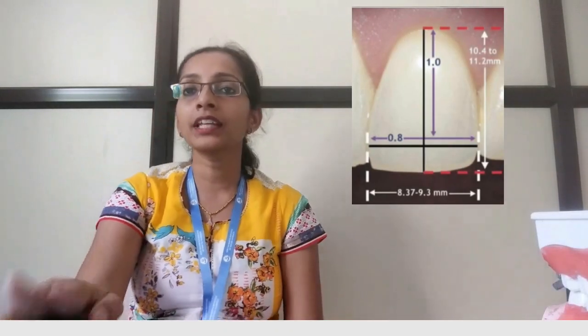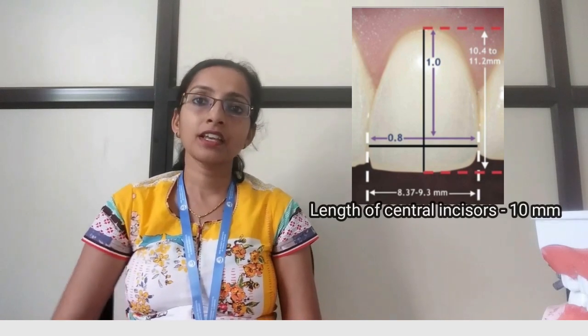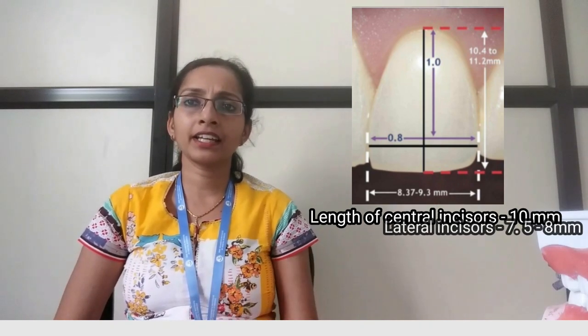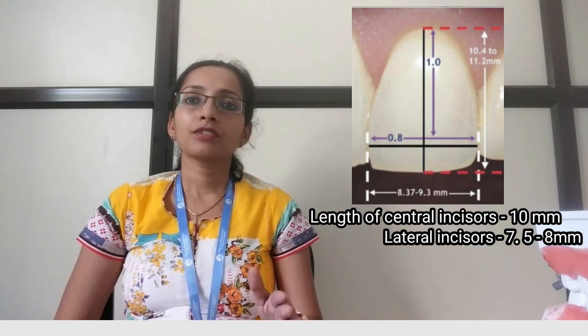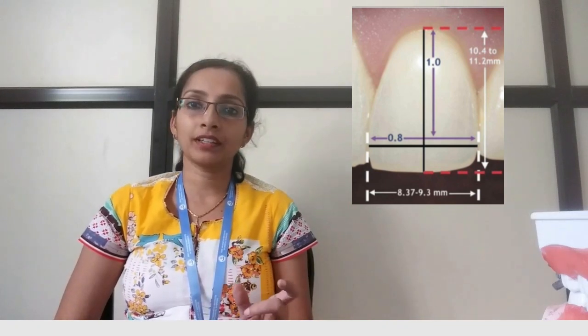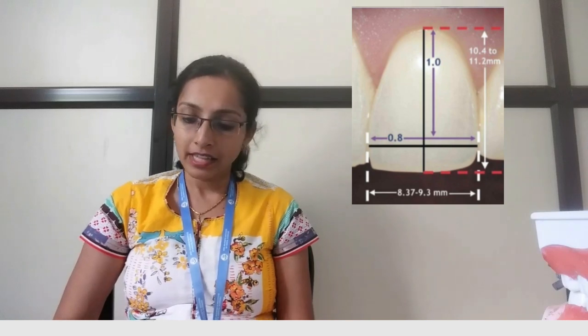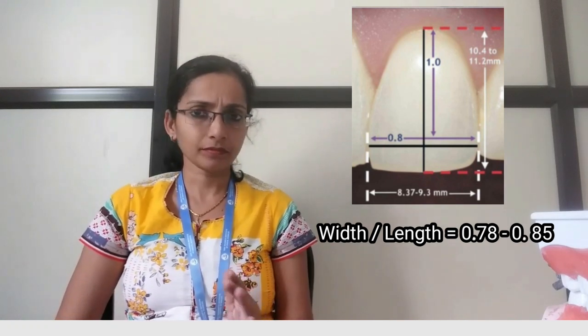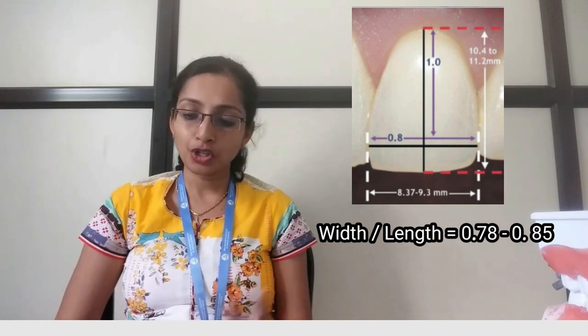The ideal length of the central incisors is about 10 mm, and the ideal length of the lateral incisors is around 7.5 to 8 mm. The second point is the width — there is something called the width-to-length ratio, which should be 0.78 to 0.85. So if your length is around 10 mm, your width will be about 8.5 mm.